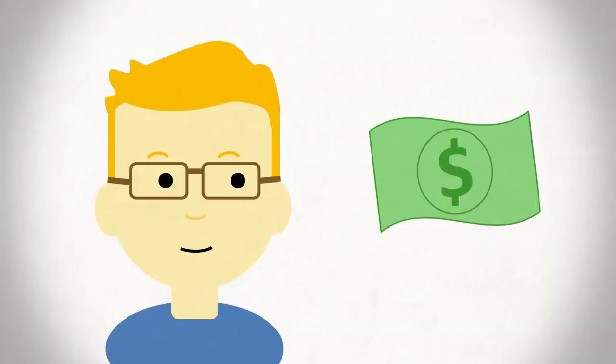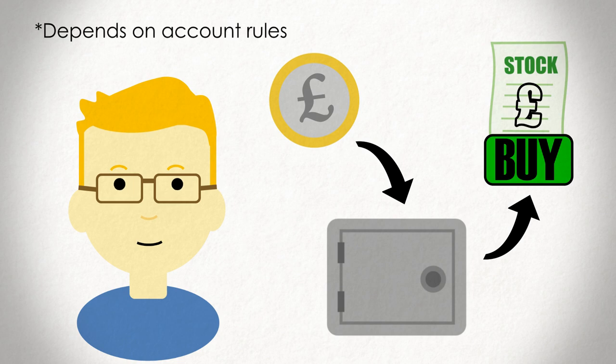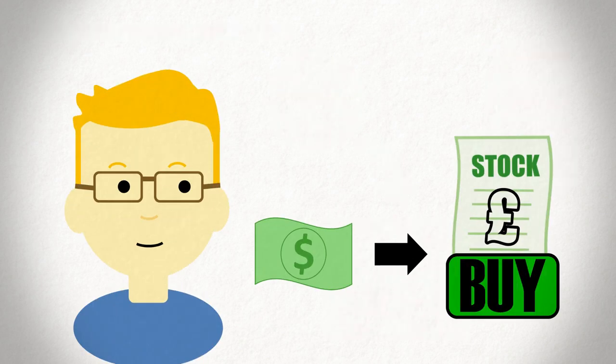Now the third step is to deal with the foreign exchange. Different stock exchanges operate on different currencies — stocks listed on the London Stock Exchange are quoted in pounds, and stocks listed on the Japanese Stock Exchange are quoted in yen. If you want to buy a foreign stock, you have to do so in the currency of the stock ticker. You can handle this in one of two ways: you can deal with the FX yourself and add the currency you need to your account before making the trade, or you can ask your broker to deal with the exchange for you.